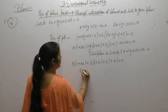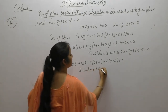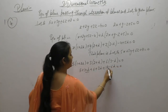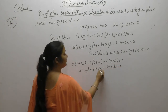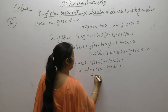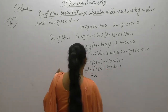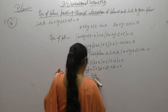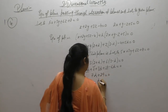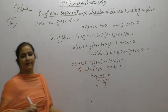We compute: 5 times (1 plus 2lambda) plus 3 times (2 plus lambda) plus 6 times (3 minus lambda) equals 0. This gives 5 plus 10lambda plus 6 plus 3lambda plus 18 minus 6lambda equals 0, so 7lambda plus 29 equals 0, giving lambda equals minus 29 by 7.